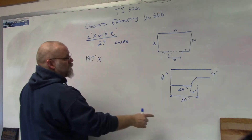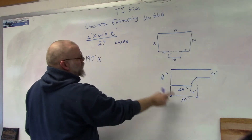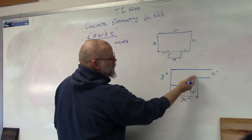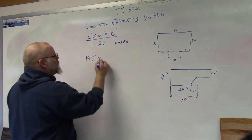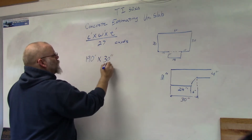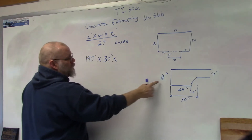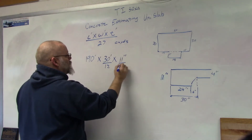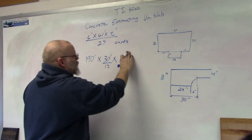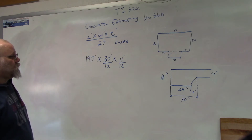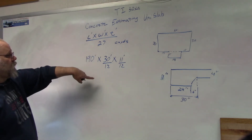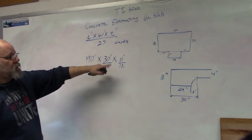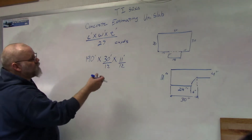Times our width — we're going to use 30 inches because it's 24 inches and the slope part, I added 6 inches, so I'm going to go with 30 inches. And then our thickness, which is 11 inches. Since these are inches, we want them in feet, so we're going to divide each one by 12. So instead of 30 inches, I get 30 over 12 feet. Instead of 11 inches, I get 11 over 12 — so 11 twelfths of a foot.